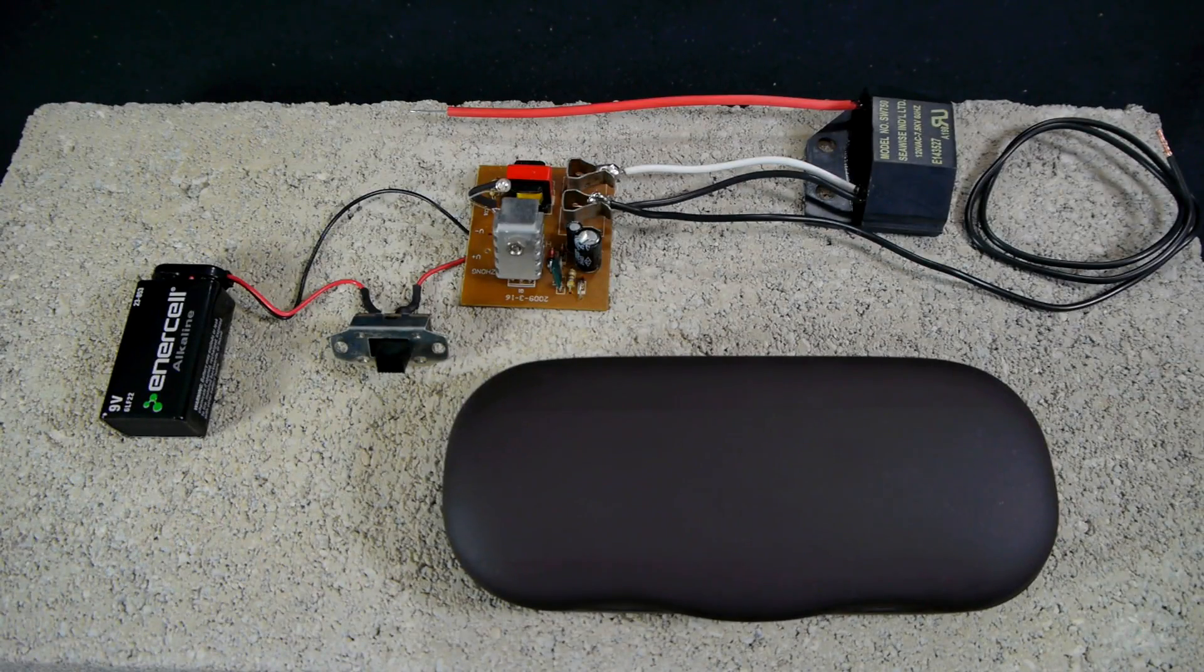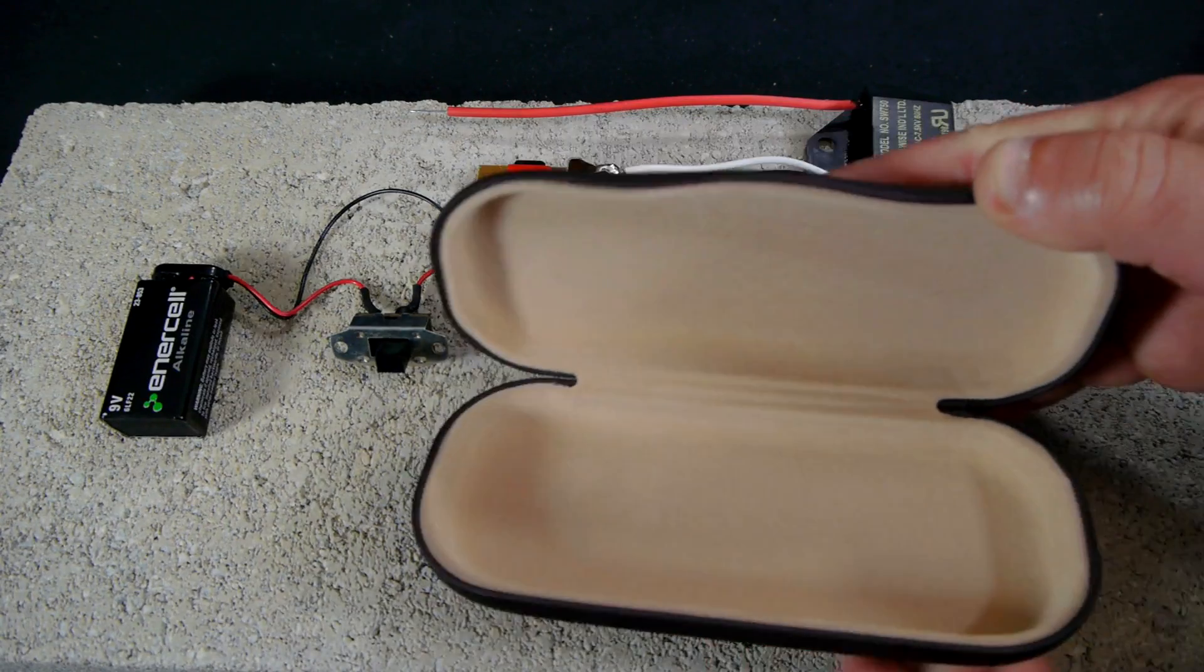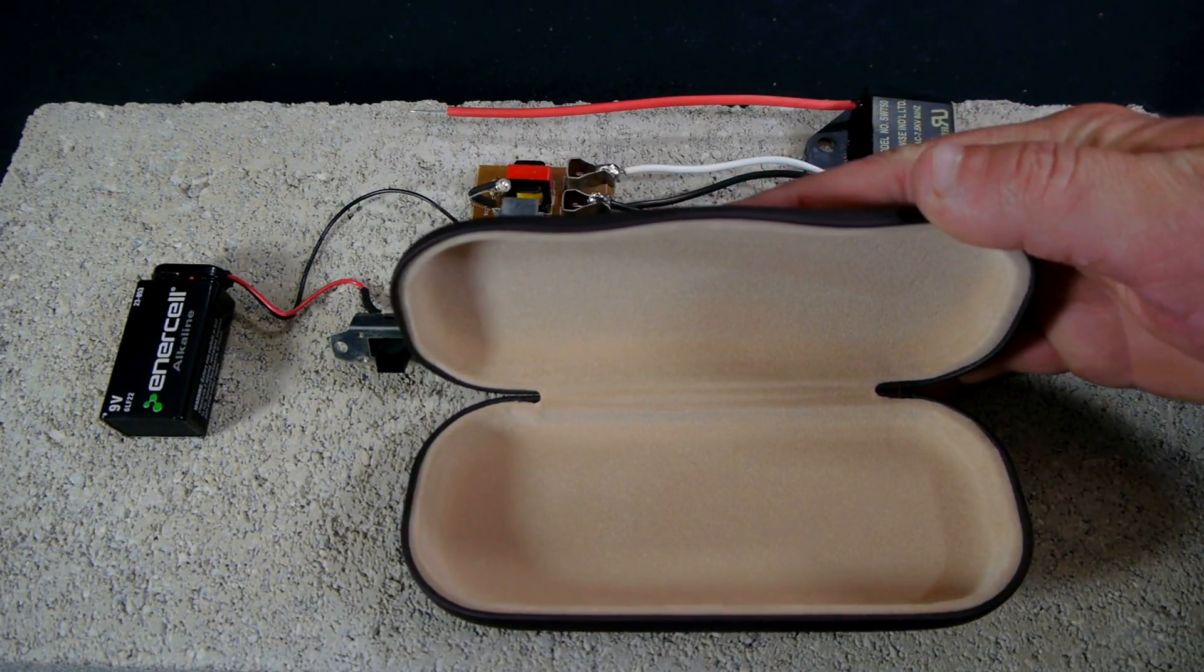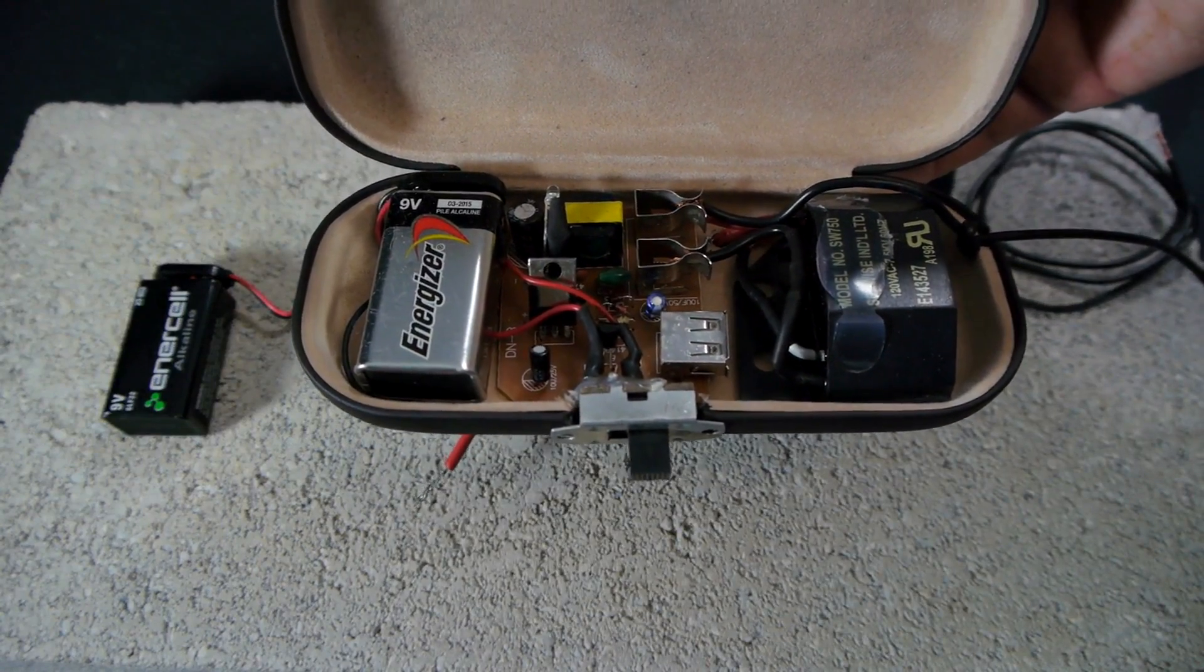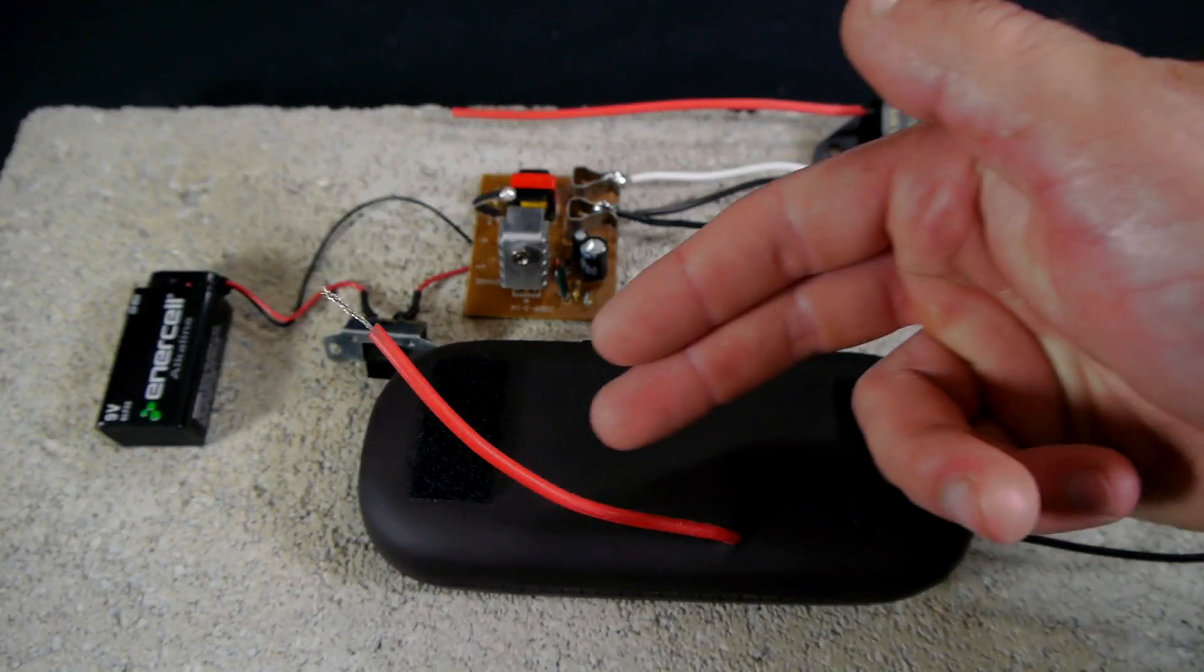With the electronics fully functional, we can now move on to installing them into a protective glasses case. We will need to make several small modifications to the glasses case for it to accommodate our electronics.